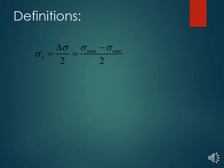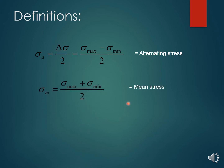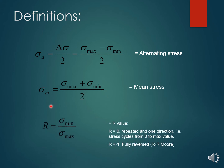Now we'll look at the definitions and how these are calculated. The alternating stress is sigma_max minus sigma_min divided by 2, or delta sigma divided by 2. The mean stress is sigma_max plus sigma_min divided by 2. We then calculate the R value — the stress ratio — which is sigma_min divided by sigma_max. R equals zero for repeated one-direction stress, where the stress cycles from zero to a maximum value, and R equals minus one for the fully reversed condition.